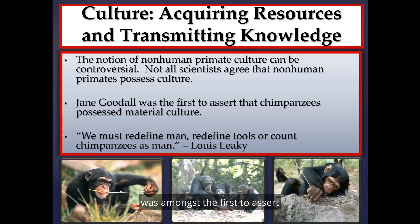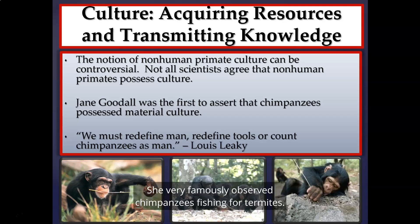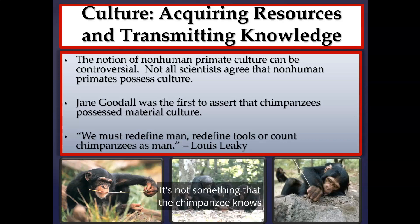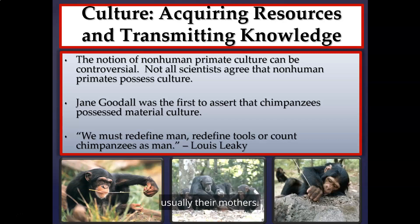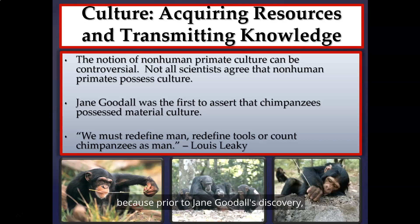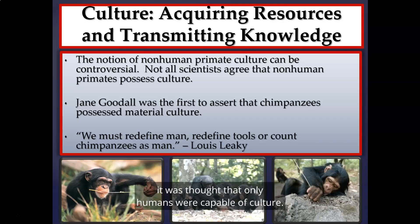Famous primatologist Jane Goodall was among the first to assert that chimpanzees possess material culture. She very famously observed chimpanzees fishing for termites — a very specialized skill requiring learning and modification of a twig. It's not something chimpanzees know automatically; they must learn it from their elders, usually their mothers. After this discovery, Louis Leakey said, 'We must redefine man, redefine tools, or count chimpanzees as man,' because prior to Goodall's discovery, only humans were thought capable of culture.